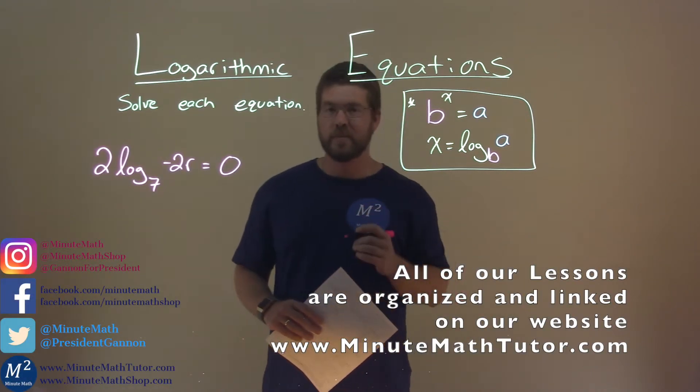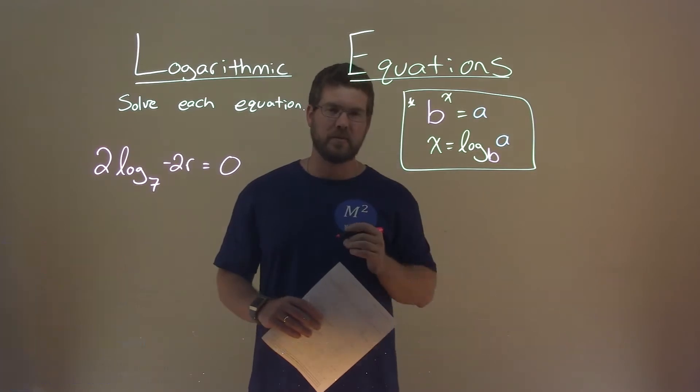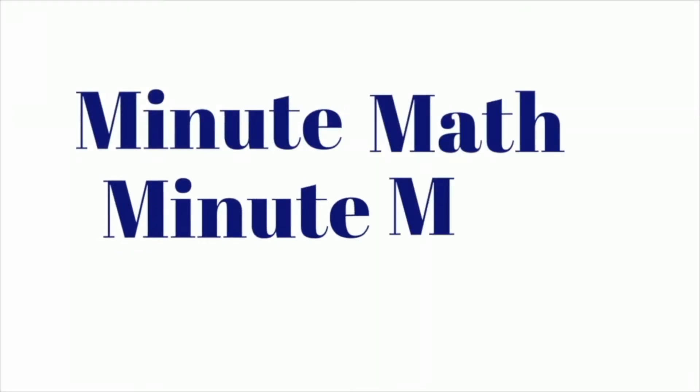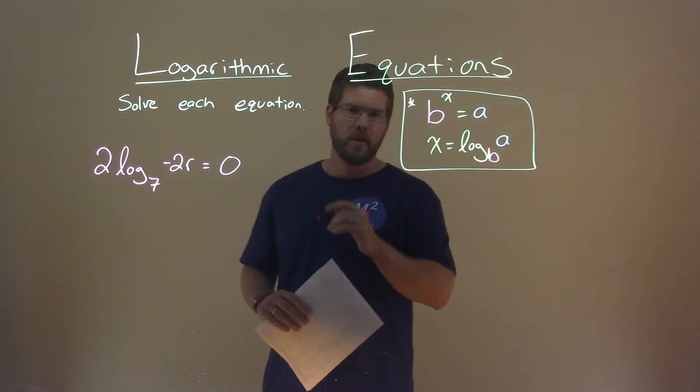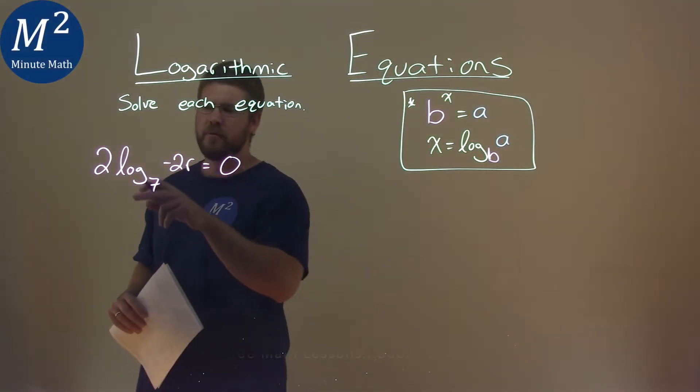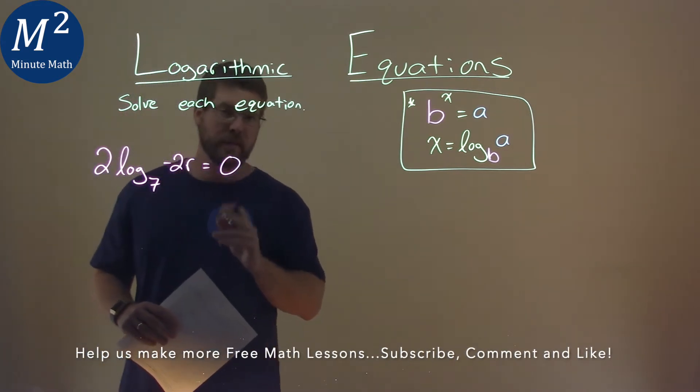Hi, I'm Sean Gannon and this is Minute Math and today we're learning about logarithmic equations. We're given this problem right here: 2 log base 7 of negative 2r equals 0, and we need to solve this.